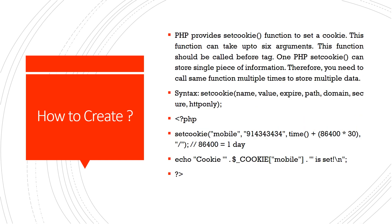PHP provides functions for working with cookies. We will now discuss what functions are used and what the syntax is. PHP provides the setcookie function to set a cookie. If you are designing a website using PHP and HTML, you can set a cookie to store your information, browser information, and user information, and then give it as a reminder to them. This function can take up to six arguments and should be called before the HTML tag. One setcookie call can store a single piece of information, so if you want more information, more cookies can be used.